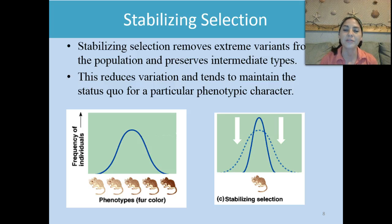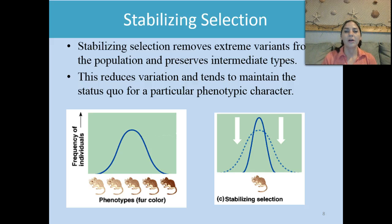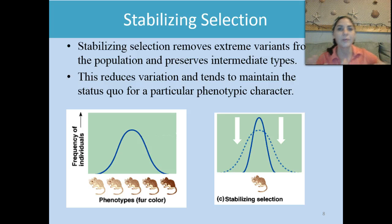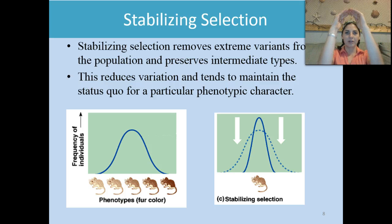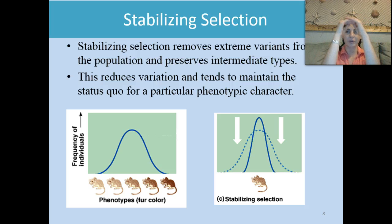Stabilizing selection preserves intermediate types, reduces variation, and tends to maintain the status quo for a particular phenotypic character. For example, human height — most females are between 5'4" and 5'8". We have females over 6' and females under 5', but the status quo is in that middle range. On the graph, stabilizing selection scoops up in the middle: we've gotten rid of the white mice and the dark brown mice, keeping only the medium-colored ones.